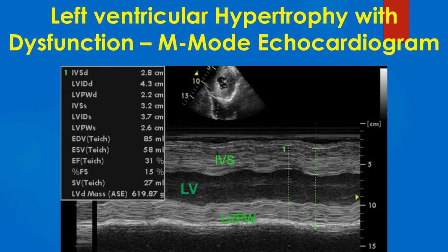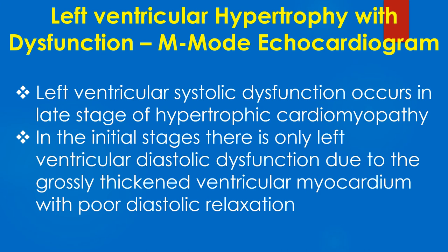Another case showing left ventricular hypertrophy with dysfunction on M-Mode echocardiogram — gross left ventricular hypertrophy and moderate to severe left ventricular systolic dysfunction. The inset shows a short axis view of the left ventricle demonstrating severe concentric LVH.